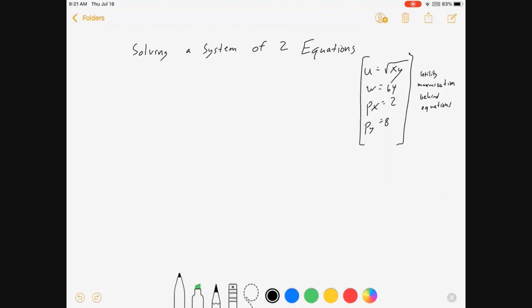I'm going to do one based on a utility maximization example. Well, who am I kidding? I'm writing this out so that it's useful for anyone, whether they've taken econ or not. We've got two equations.